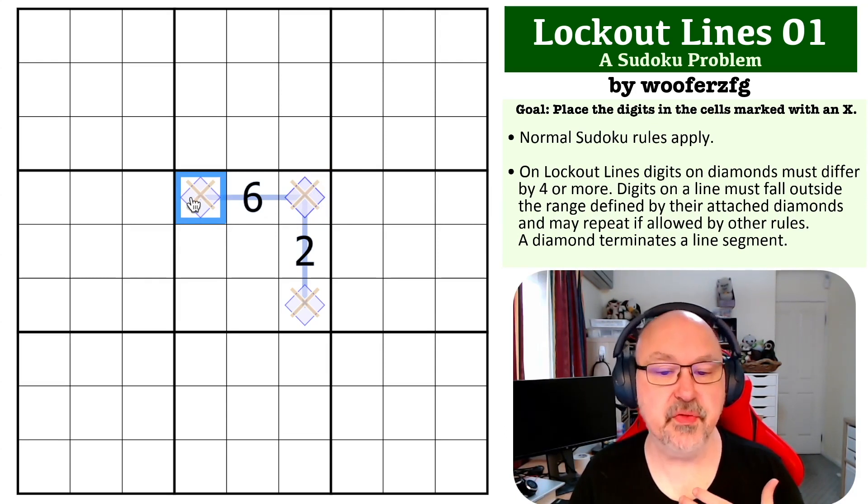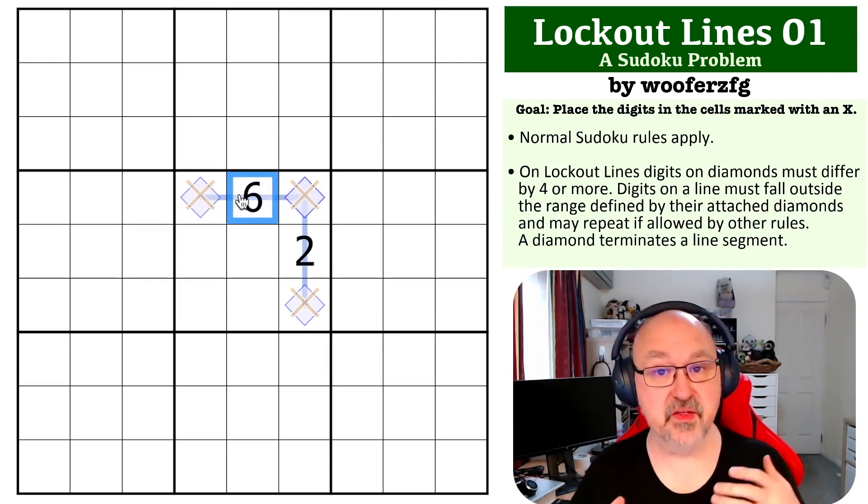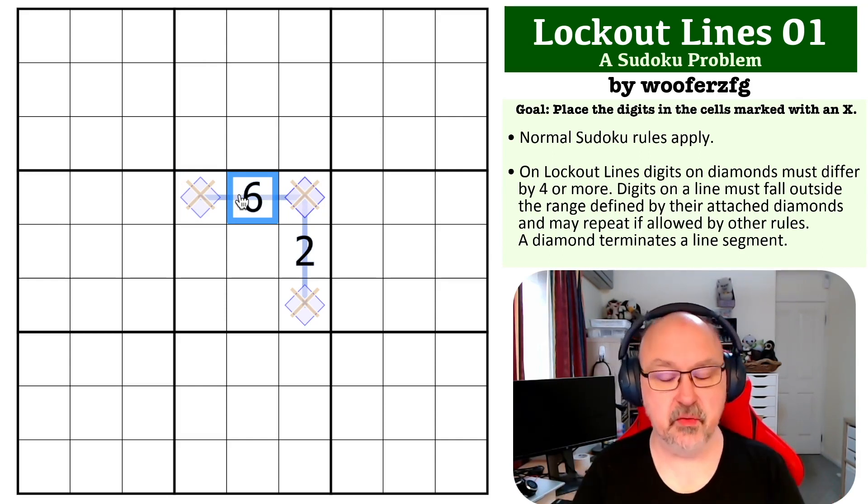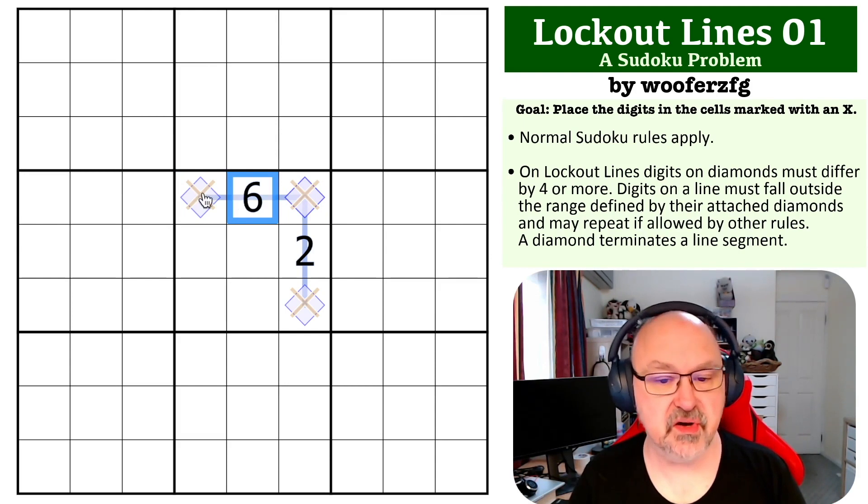So if I went to a three, if I went three, seven here, six is between three and seven. So it's not locked out of those digits. So it can't go on the line. And it gets worse the closer I get to the six.